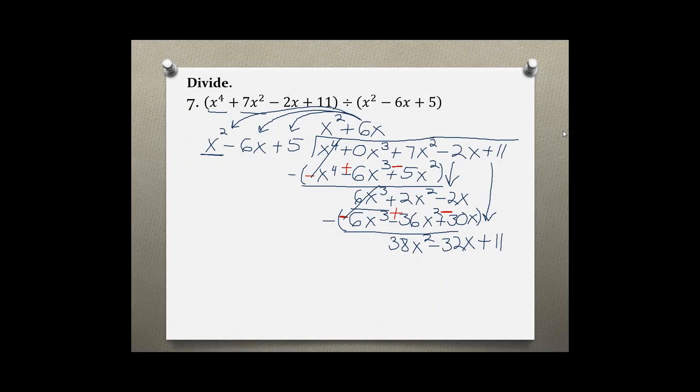By what do we have to multiply x squared to get 38x squared? We multiply by positive 38, because 38 times x squared is 38x squared, and 38 times negative 6x is negative 228x, and 38 times 5 is positive 190.